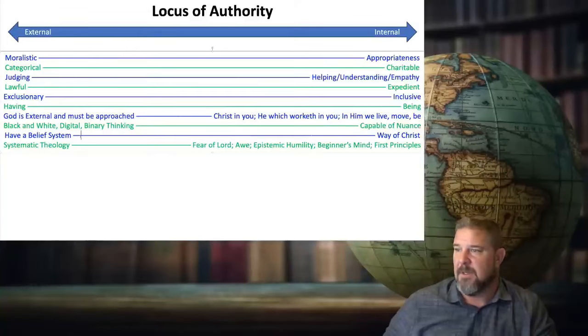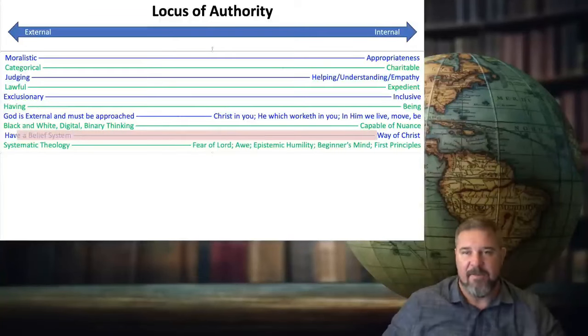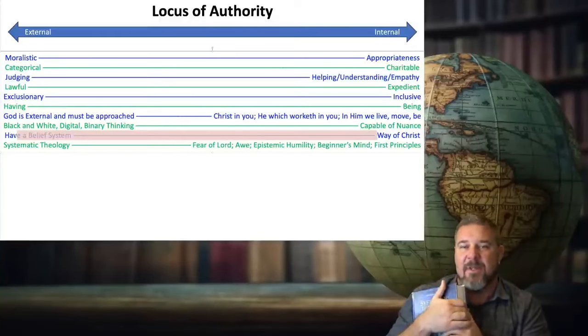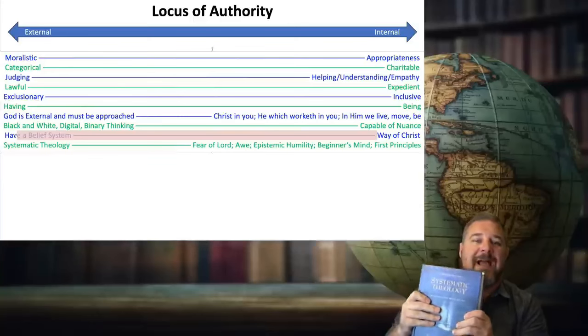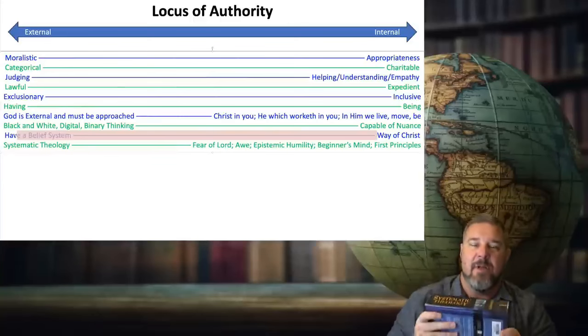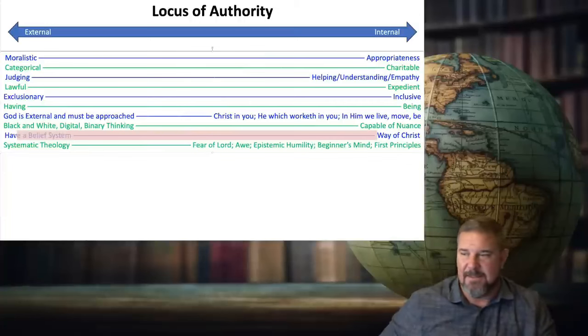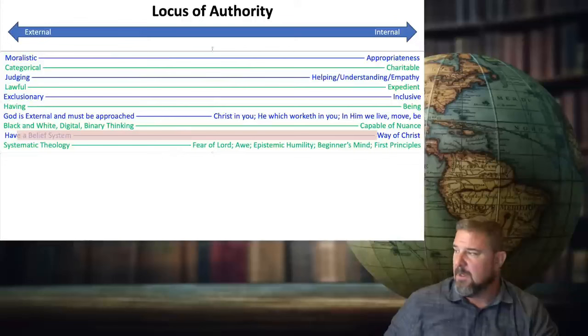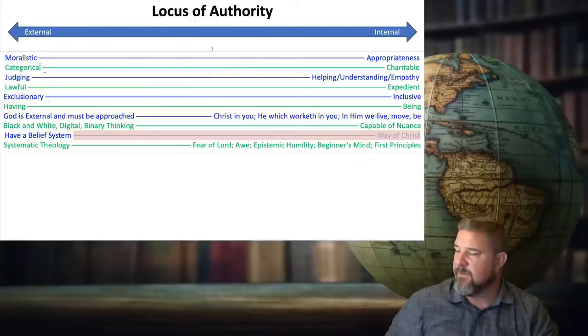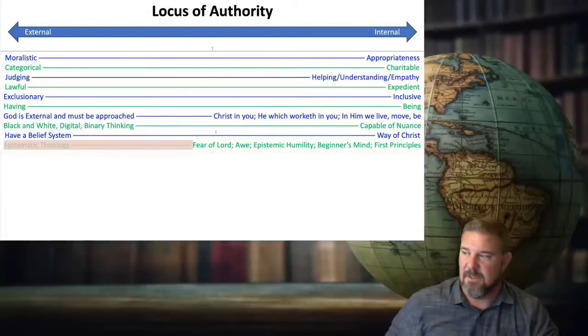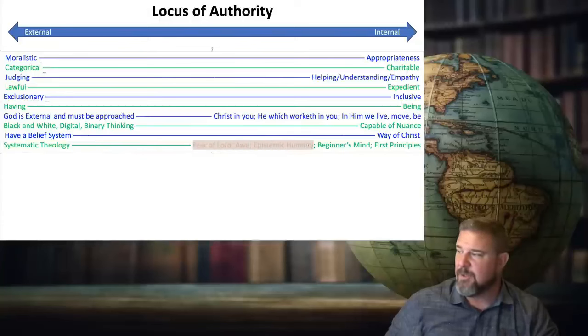In external locus of authority, you have a belief system. I have it in having mode and I identify with it and I'm attached to it. And if anybody attacks my belief system in having mode, I feel personally attacked like my identity is at stake. So you have a belief system. If you have an internal locus of authority, you're following the way of Christ. If you have an external locus of authority, you have systematic theology. An internal locus of authority is more about the fear of the Lord, awe, epistemic humility, beginner's mind, first principles thinking.